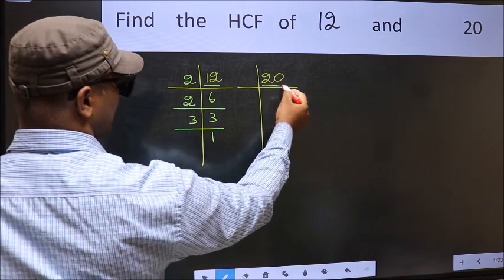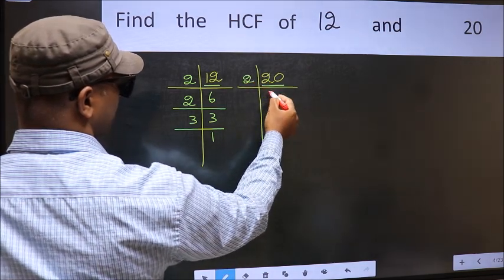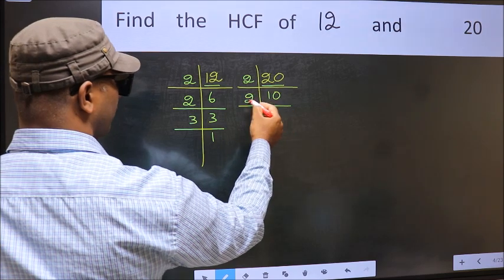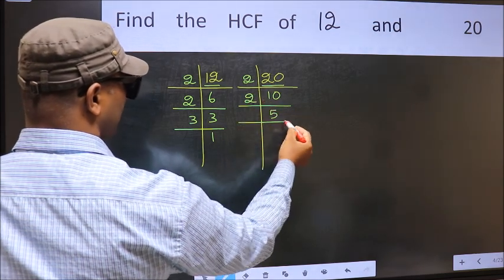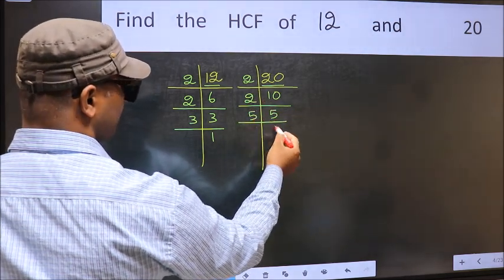Now the other number. 20: 2, 10, 20. 10: 2, 5, 10. 5 is a prime number, so 5, 1, 5.